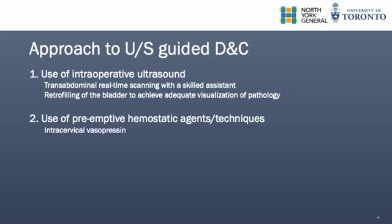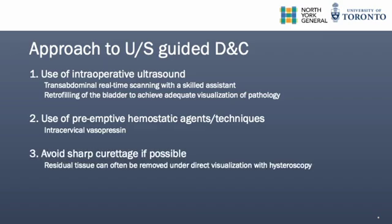Secondly, the use of vasopressin to aid in minimization of blood loss is especially important in cases where hemostasis cannot be reliant on myometrial contraction. Other techniques for preemptive hemostasis such as transvaginal ligation of the cervicovaginal vessels and uterine artery embolization have also been described. One could also consider preoperative tranexamic acid administration. Thirdly, we recommend avoiding the use of sharp curettage if possible, as this may result in tissue trauma and excessive bleeding.